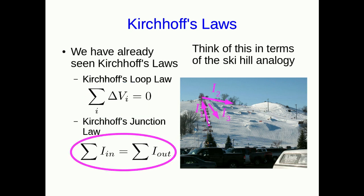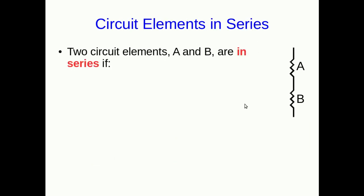Similarly, if a bunch of skiers are arriving at the top of the chairlift, then the number of them that go down all the available runs has to add up to the number arriving at the top. We often use the term circuit element — it just means any piece of a circuit, whether it's a resistor, a battery, a capacitor, or whatever. If we don't want to be specific about what it is, we call it a circuit element.